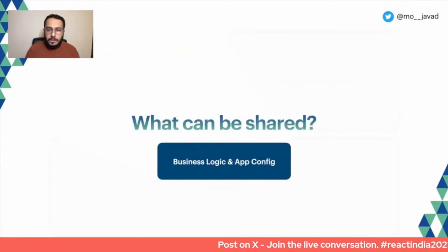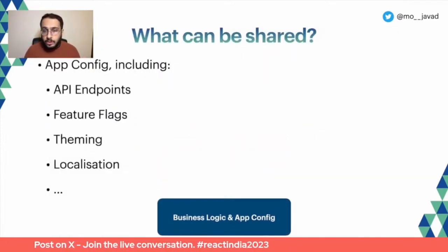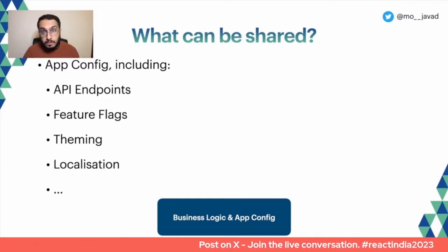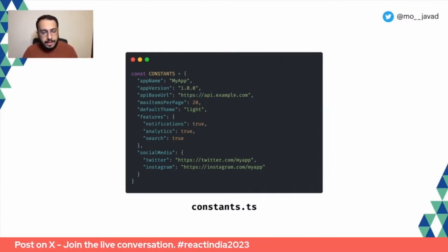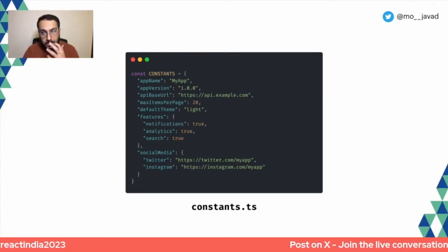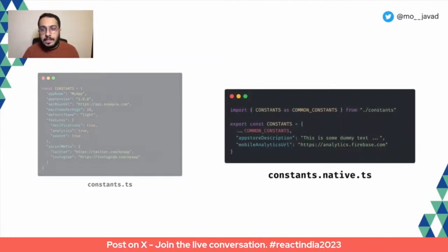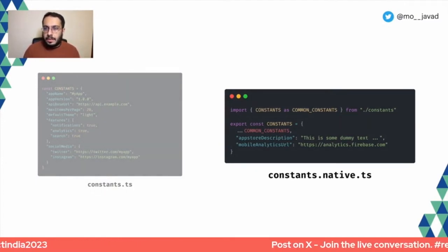What can we share across business logic and app config? If we start looking at app config, we should be able to share things like API endpoints, feature flags, themes, or localizations. All of this should be shared across the board. If you have a constants file where you define things like social media handles or feature flags, and you want to extend it for a specific platform, you can simply spread that object and add anything that's platform-specific. It's quite simple to share constants — nothing super exciting, nothing new.